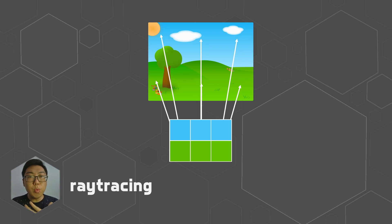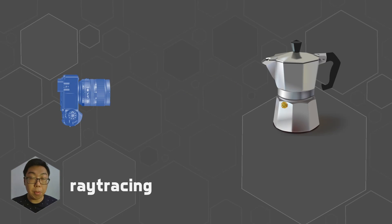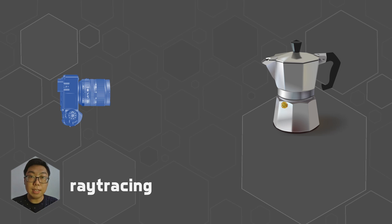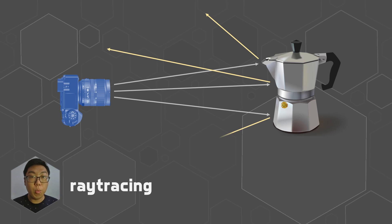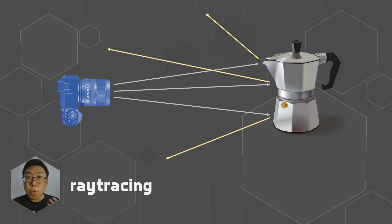So where do reflections come into play? All we have to do when we are sending out those rays and one hits a reflective surface is that the rays bounce. When they hit the surface, they bounce off and go elsewhere to try and find a color to sample.